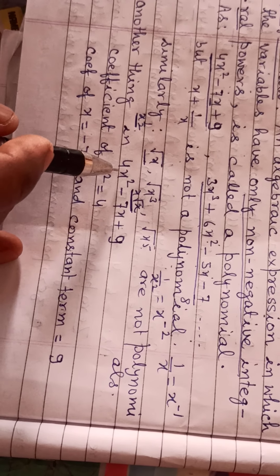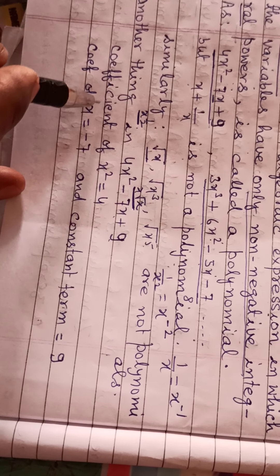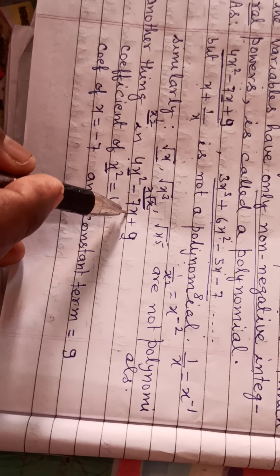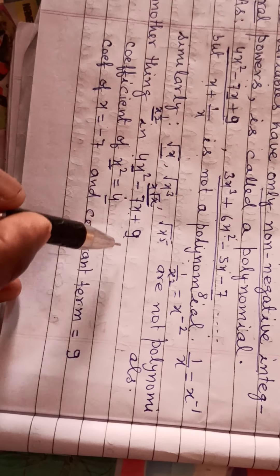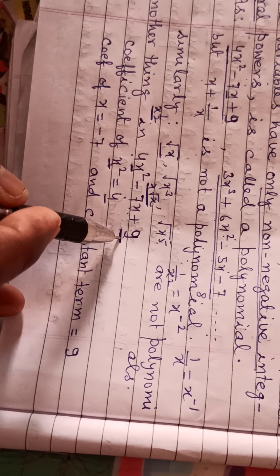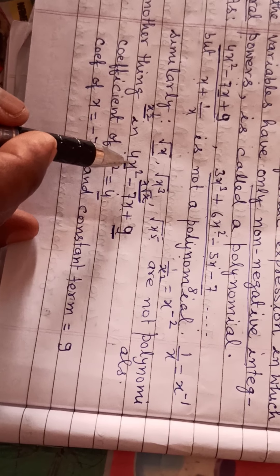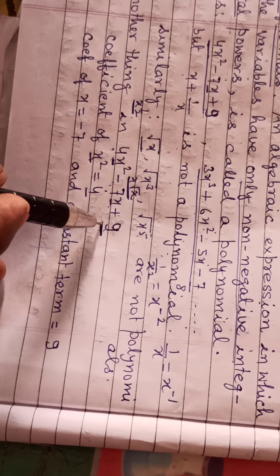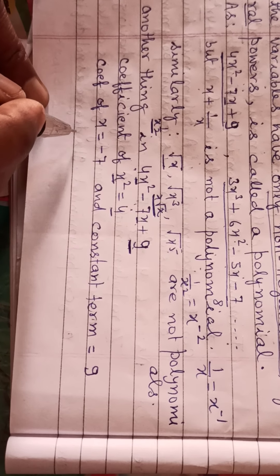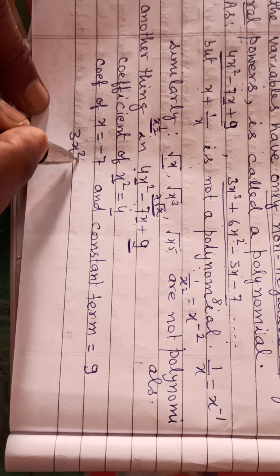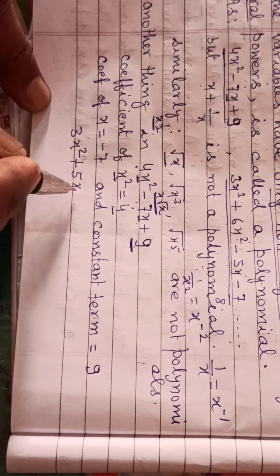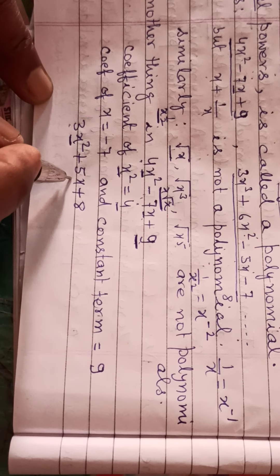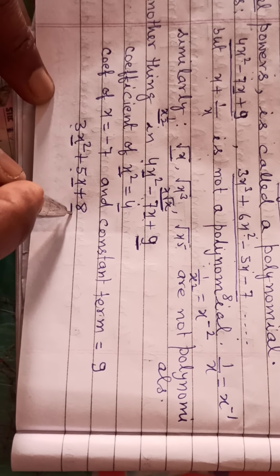Another thing: in 4x squared minus 7x plus 9, the coefficient of x squared equals 4, the coefficient of x equals minus 7, and the constant term is plus 9. As another example, in 3x squared plus 5x plus 8, the coefficient of x squared equals 3, the coefficient of x equals 5, and 8 is the constant term.